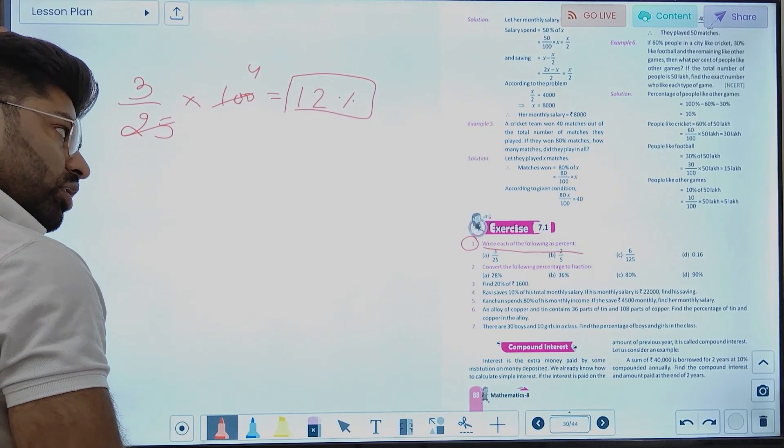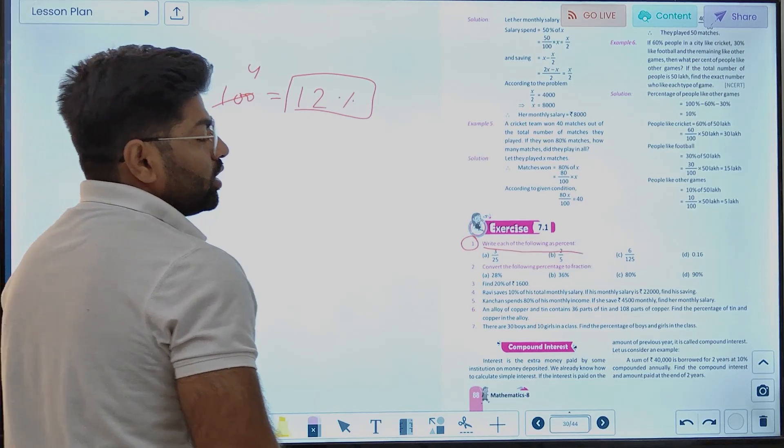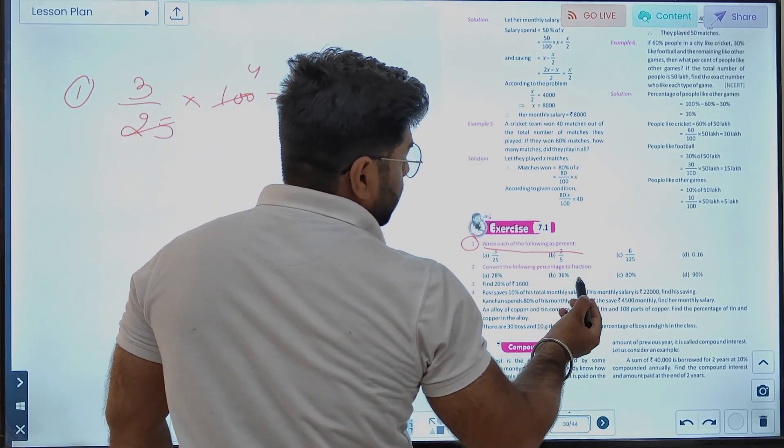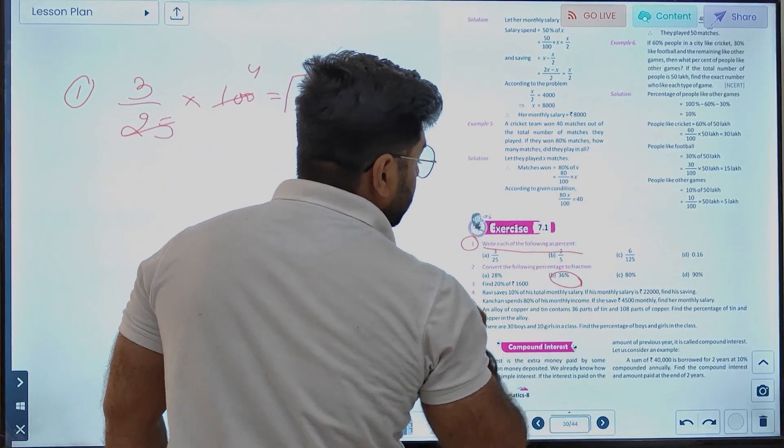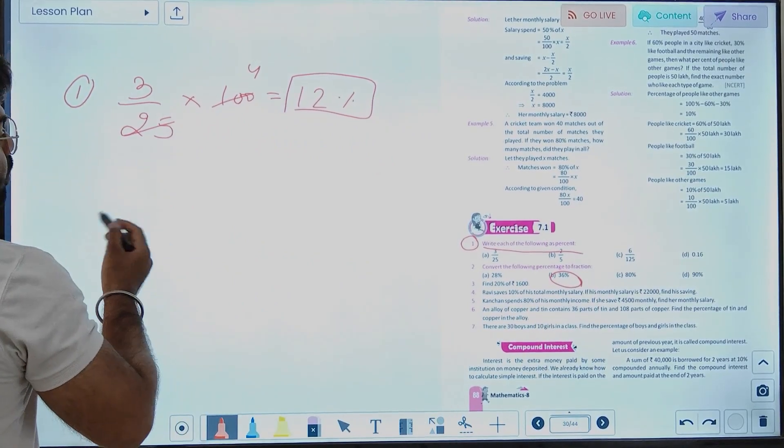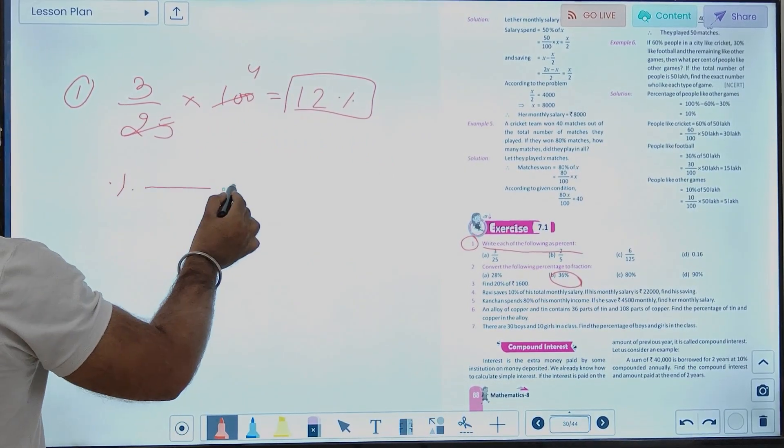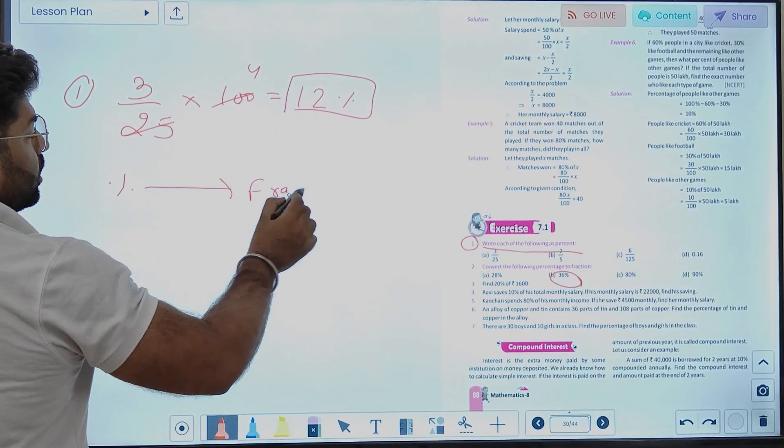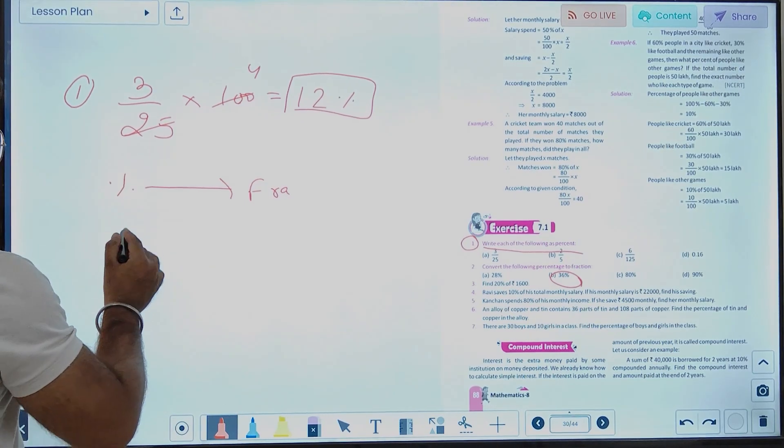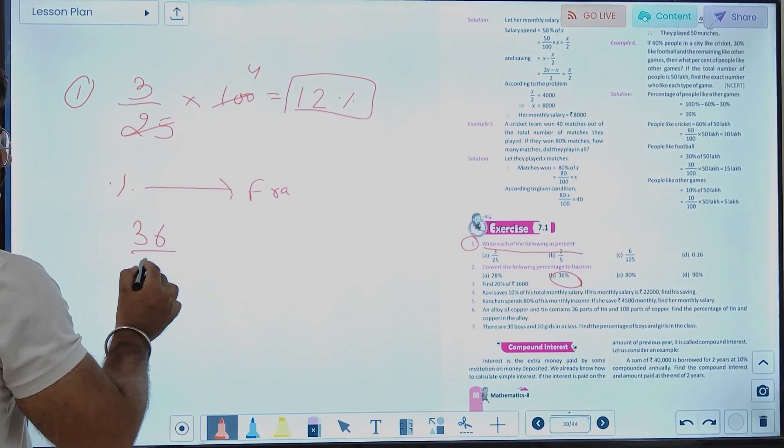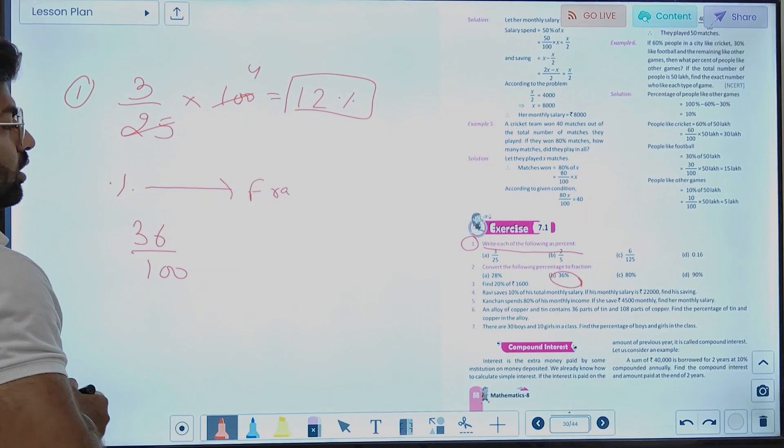We will get 35 out of 100, and that is 35 percent. Question number 2: convert the following percentage into fraction. So we will talk about fraction now, we will convert the percentage. Now we have to write our fraction out of 100 to divide.